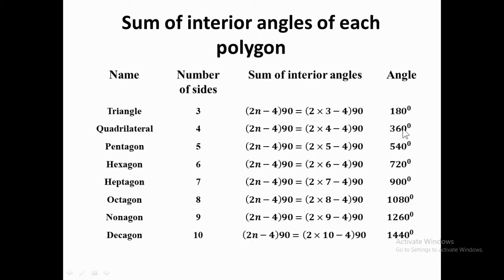For a square, rectangle, parallelogram — any quadrilateral — the sum of interior angles is 360 degrees. For a pentagon with 5 sides: 2×5 = 10, minus 4 = 6, times 90 = 540 degrees. For a hexagon with 6 sides: 2×6 = 12, minus 4 = 8, times 90 = 720 degrees. You can apply the same process for octagon, nonagon, decagon, and any other polygon.